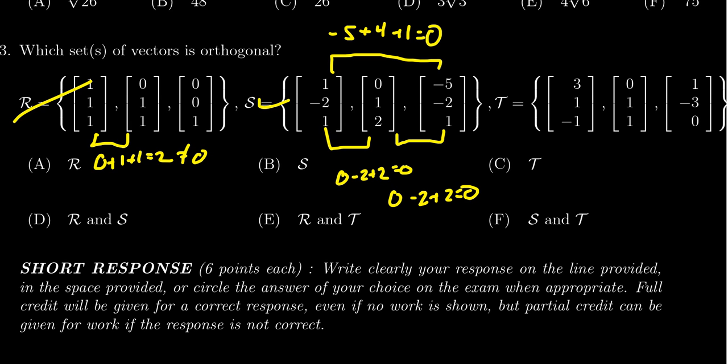Let's do the same thing for T. If we look at the first pair, take their dot product, you get zero plus one minus one. That's a zero. That's a good sign.